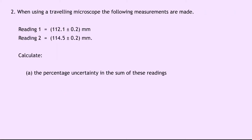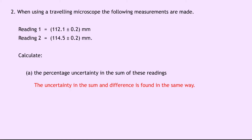Question 2 says when using a travelling microscope the following measurements are made. So we're given two readings in millimetres: 112.1 plus or minus 0.2 millimetres and 114.5 plus or minus 0.2 millimetres — so we've got the same uncertainties. It says calculate for part A the percentage uncertainty in the sum of these readings, and part B asks us to find the percentage uncertainty in the difference of these readings. The first thing we need to realise is that the uncertainty in the sum and difference is found in the same way.